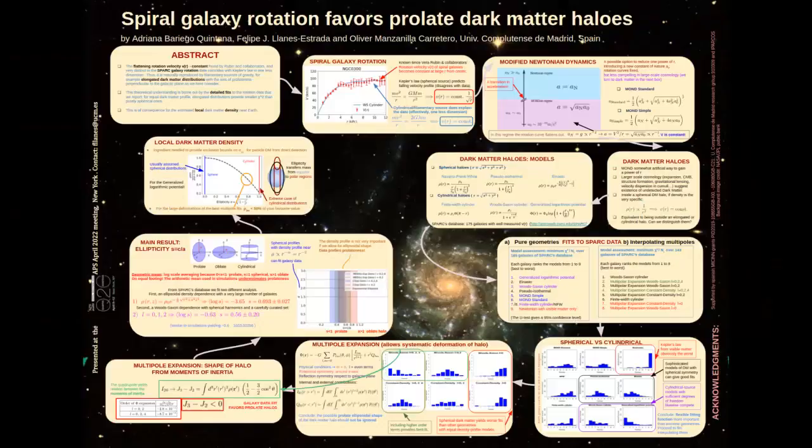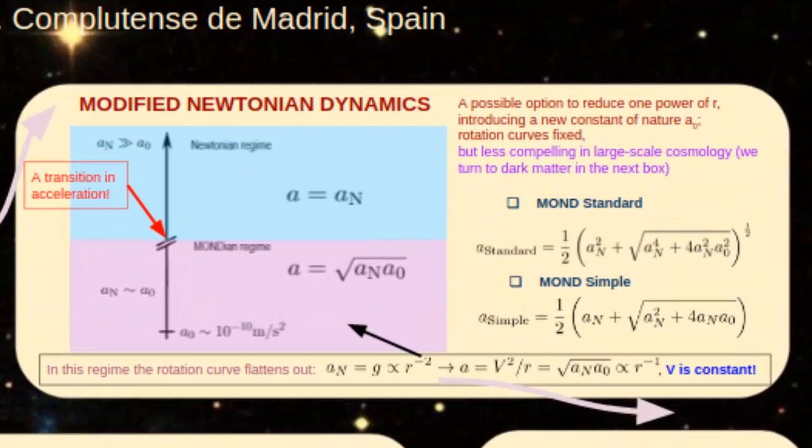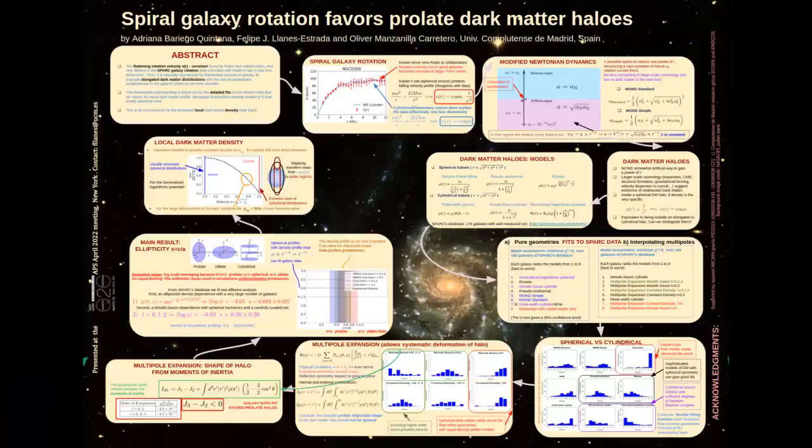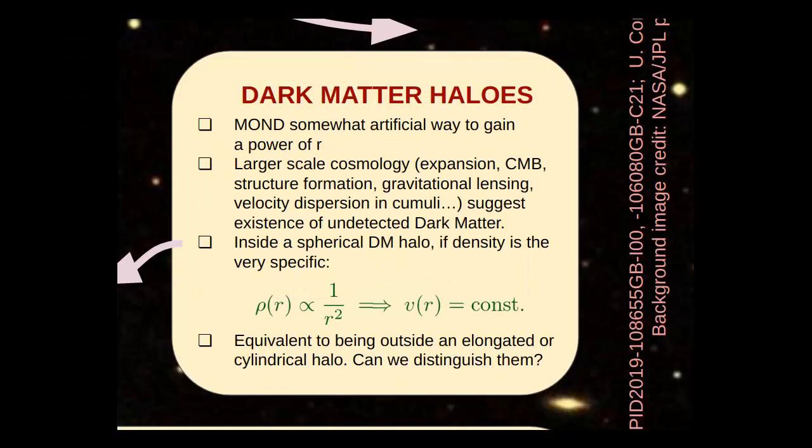A possibility that also works is to modify the law of gravity, somehow ad hoc, to effectively draw from r to minus two to one over r at large distances by altering Newton's second law. This goes under the name Modified Newtonian Dynamics or MOND. These theories, however, lose the theoretical elegance of Newtonian mechanics. We will examine two versions of MOND dubbed simple and standard.